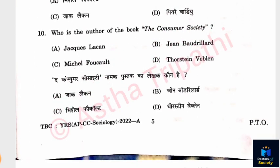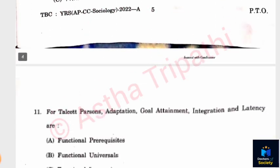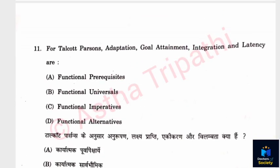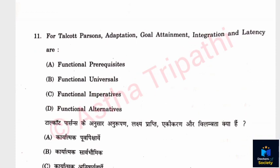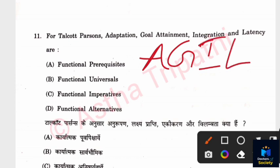Question 10: Who is the author of the book 'The Consumer Society'? Options: Jacques Lacan, Jean Baudrillard, Michel Foucault, Thorstein Veblen. The answer is Option B — Jean Baudrillard. Question 11: For Talcott Parsons, Adaptation, Goal Attainment, Integration, and Latency — the AGIL model — are known as what? Options: Functional Pre-Requisites, Functional Universals, Functional Imperatives, Functional Alternatives. The answer is Option A — Functional Pre-Requisites.